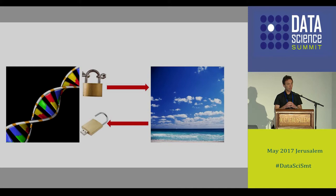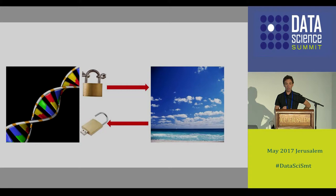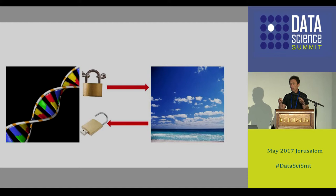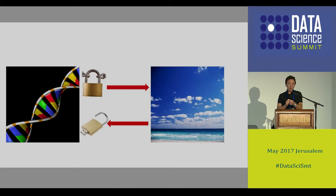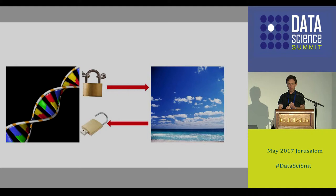You send the encrypted data - obviously without the key - to the cloud that hosts these services, which can give you all sorts of interesting predictions over your data. They can do whatever they want with the encrypted data because it's encrypted - they cannot do anything with it. I'm not talking about pseudo-encryption, I'm talking about full-blown encryption. They could work on this data and send you the results, and you can decrypt it. They don't get to see your data, they can still make accurate predictions, and they don't even get to see the results - it all remains encrypted. Only you can decrypt the data and see the results.